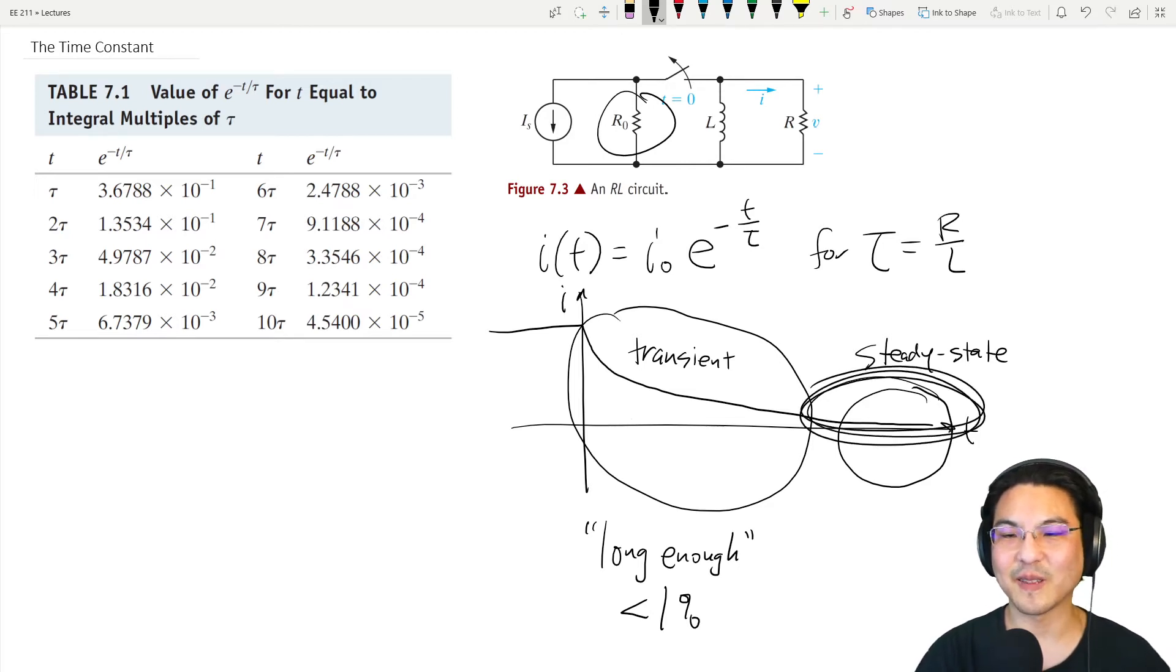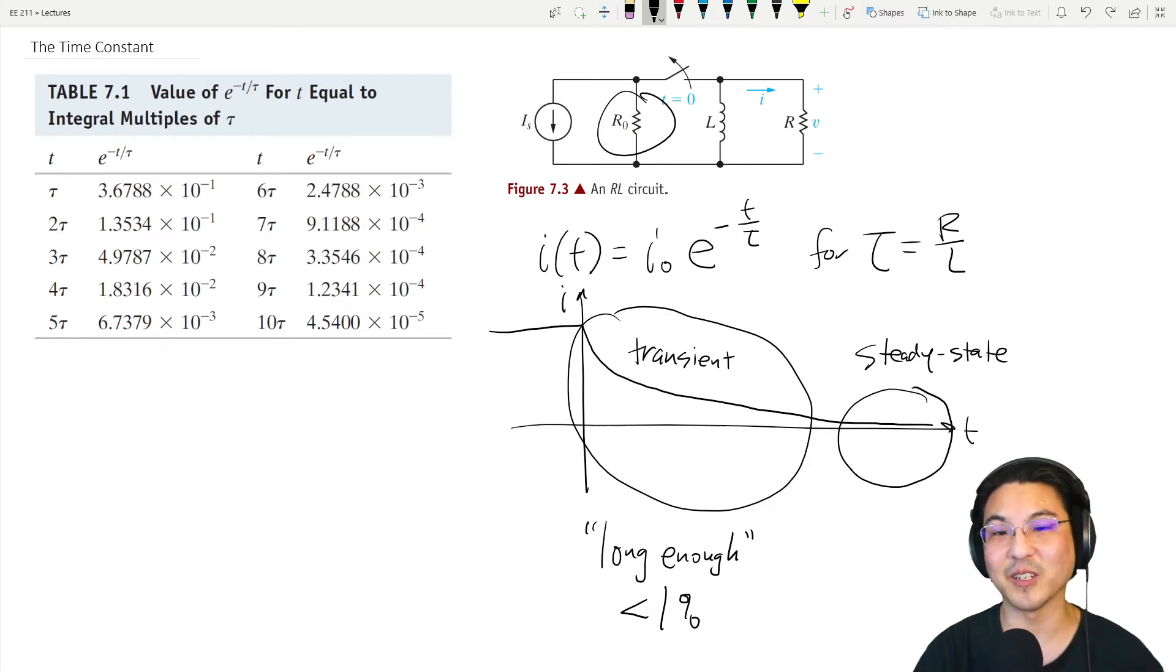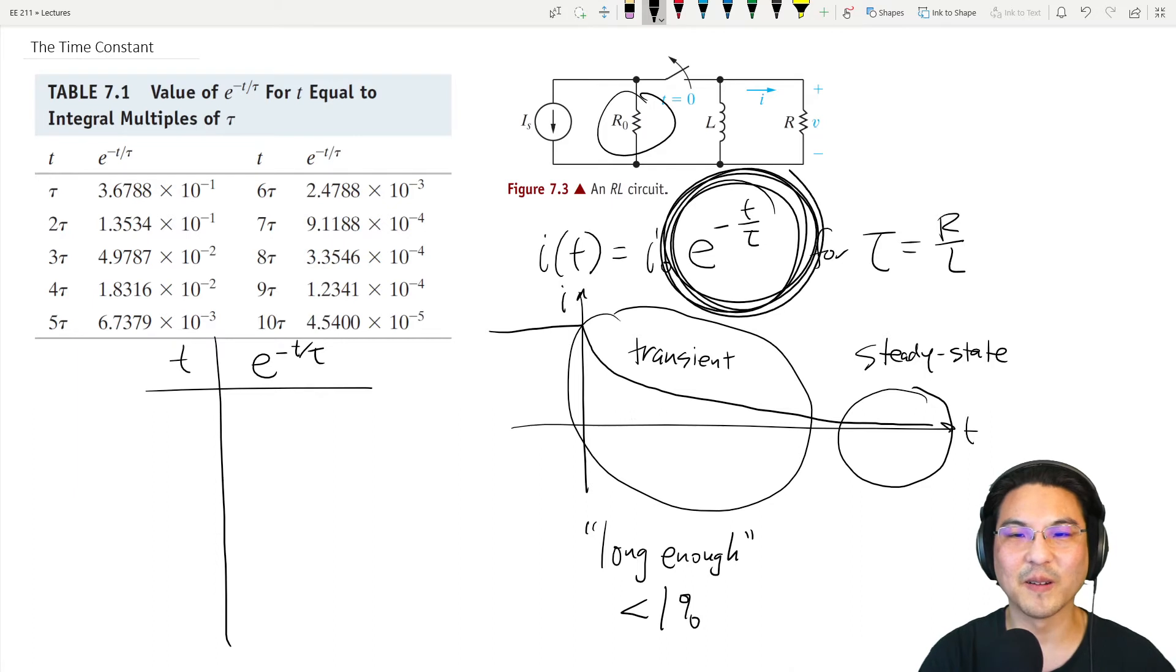If we wait long enough that it's less than one percent, that seems reasonable. That really just depends on your particular application. As an engineering team you can say, no, that's not good enough, we need to wait until it's below 0.1 percent—you can just adjust. For general consensus, less than one percent. How long is that? Let's take a look at this table.